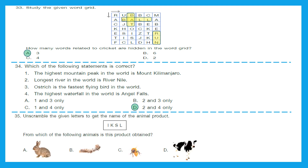Question 35: Unscramble the given letters to get the name of an animal product. The answer is silk — S-I-L-K. From which animal is this product obtained? Silk we get from silkworm. Option B, silkworm, is the right answer. With this, we have successfully solved the class 2 IGKO previous year question paper.